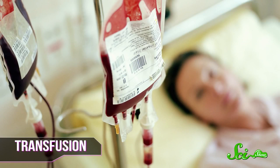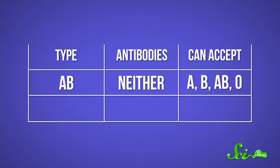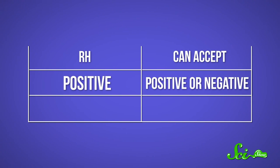When it comes to transfusing blood from one person to another, compatibility is kind of important to preventing a serious, possibly life-threatening reaction. Finding the right match has less to do with which letter you have than which letter you have antibodies for. Type AB people don't have antibodies for either A or B, so they can accept A, B, AB, or O. But type O's have both A and B antibodies, so they can only accept other O's. As for the RH antigens, people with positive blood types can accept either positive or negative blood, but negative types are safest taking only negative blood — while they can tolerate positive blood, they can do it only once.